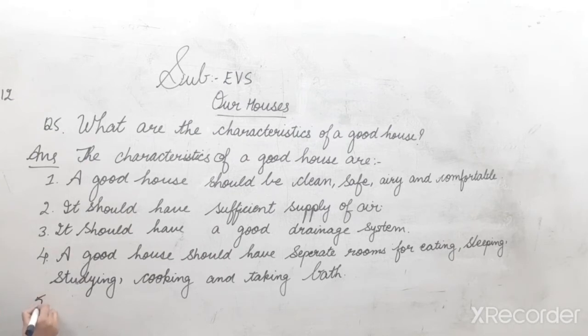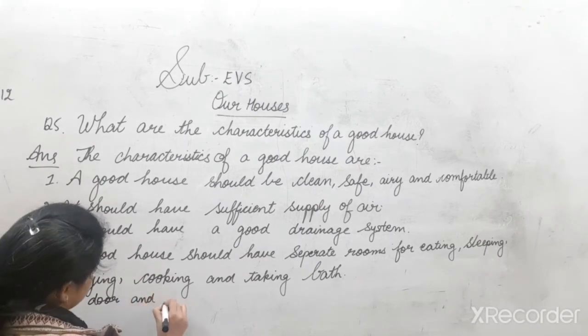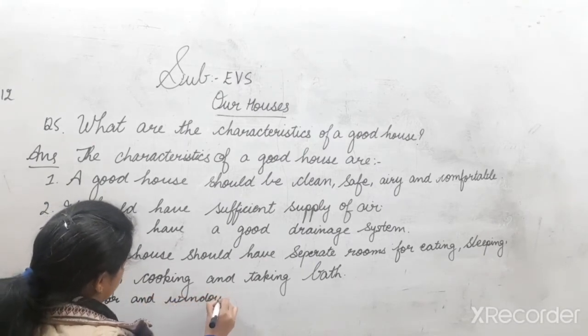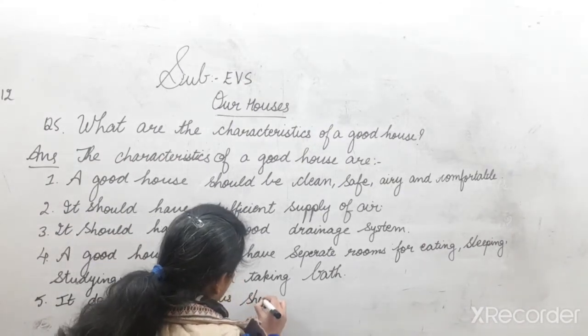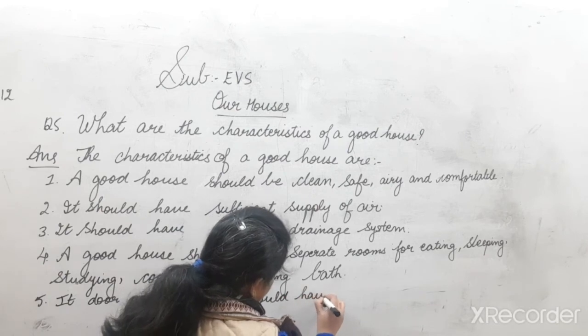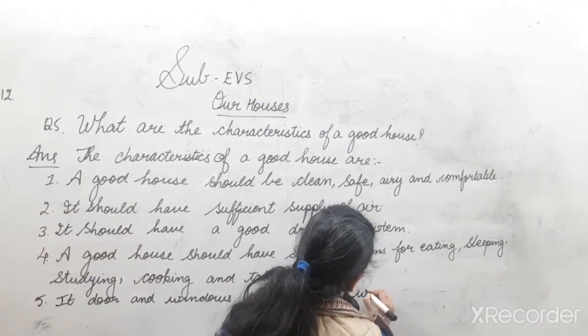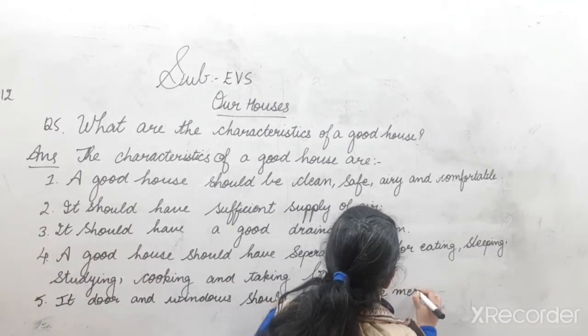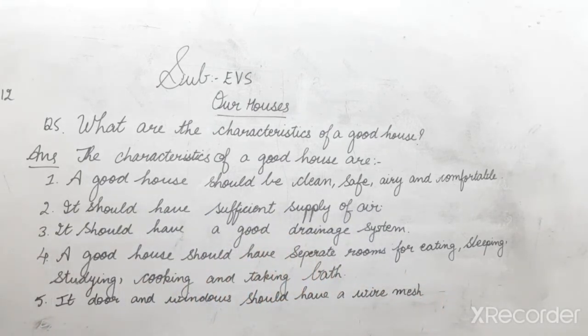And last one, fifth one, five points is sufficient. It, door and windows should have a wire mesh so that mosquito should not enter the house.